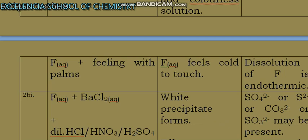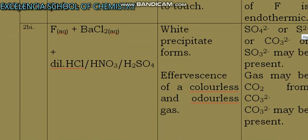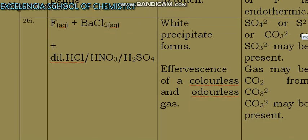When you add barium chloride, you see white precipitate forms. When you get white precipitate, you suspect sulfate or sulfide or carbonate or sulfite. You must mention at least three of them, and it must include carbonate. Trioxocarbonate(IV) ion may be present.